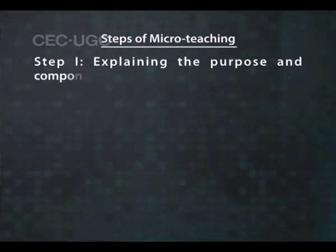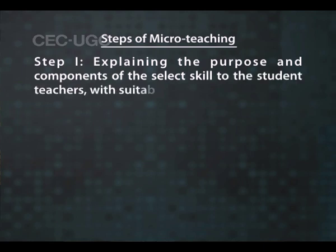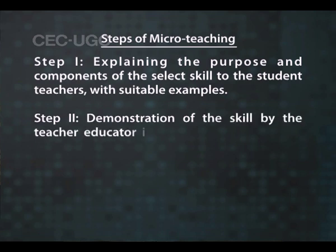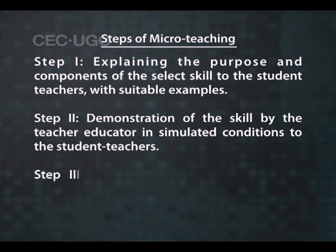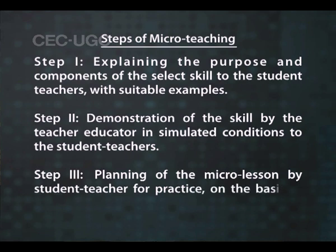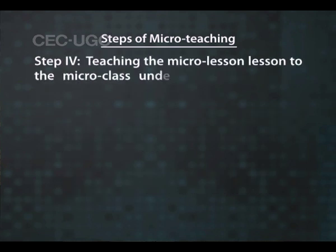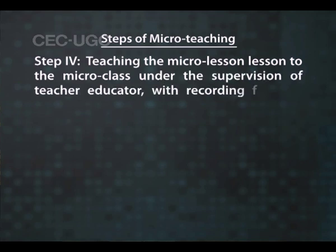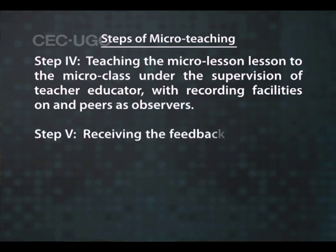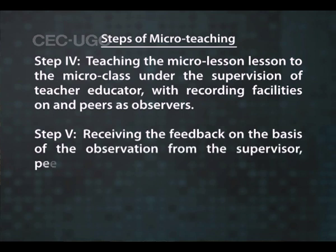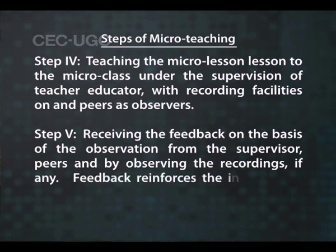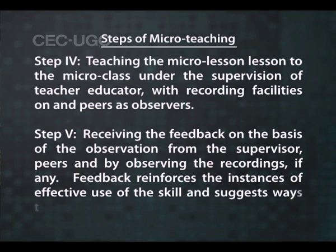Steps of micro-teaching. Step 1: explaining the purpose and components of the selected skill to the student teachers with suitable examples. Step 2: demonstration of the skill by the teacher educator in simulated conditions to the student teachers. Step 3: planning of the micro lesson by the student teacher for practice on the basis of the demonstration. Step 4: teaching the micro lesson to the micro-class under the supervision of the teacher educator with recording facilities on and peers as observers. Step 5: receiving feedback on the basis of observation from the supervisor, peers and by observing the recordings. Feedback reinforces the instances of effective use of the skill and suggests ways to correct the weaknesses.